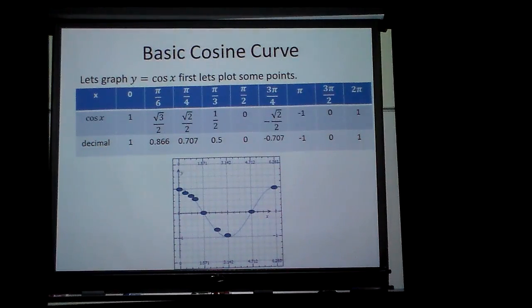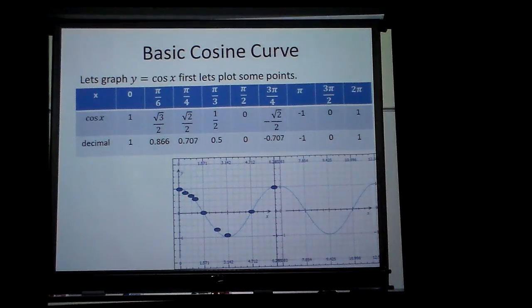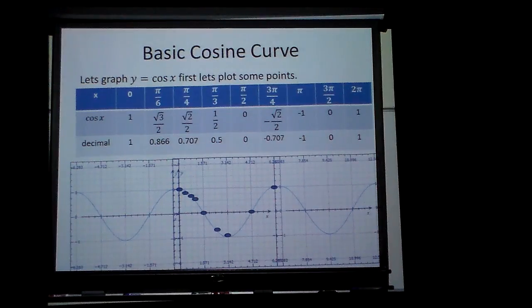So there is the basic cosine graph for a period of two π. Notice, it starts at zero, one. It starts up at one. And if I were to continue the graph on there, the cosine would look like that. And if I continued on that side, it would be there.